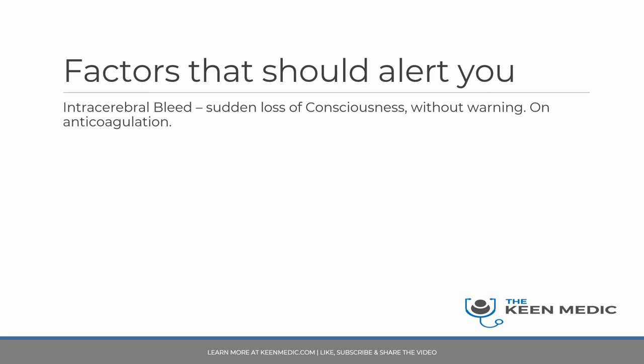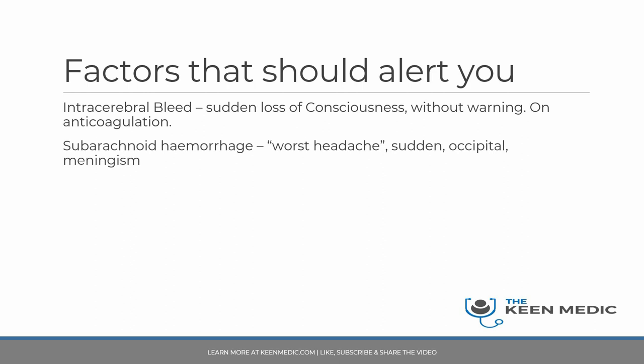Subarachnoid hemorrhage usually presents as the worst headache the patient has ever had, often sudden and occipital in location with meningism — neck stiffness, photophobia, and Kernig's sign may or may not be present. CT head should be done, but does not fully rule out subarachnoid hemorrhage. If suspicion is high, you must proceed to lumbar puncture and look for xanthochromia to rule it out adequately.